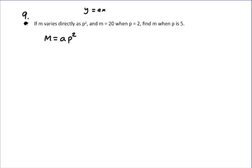And I get all of that information from this opening little part of a sentence. M varies directly as P squared. The thing that is most often forgotten is this little A value right here. He's there every single time. Don't forget him.